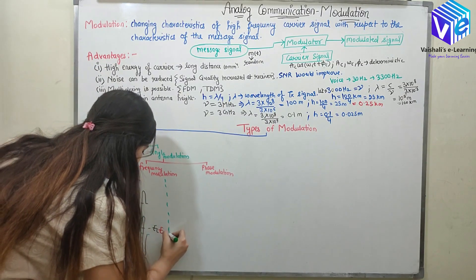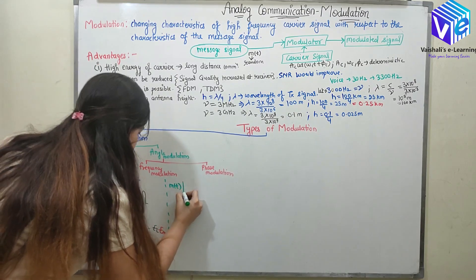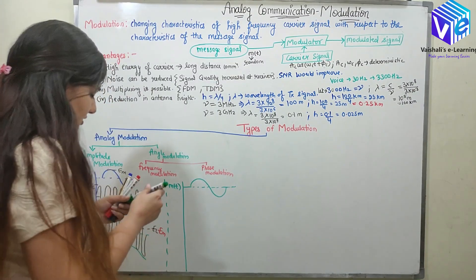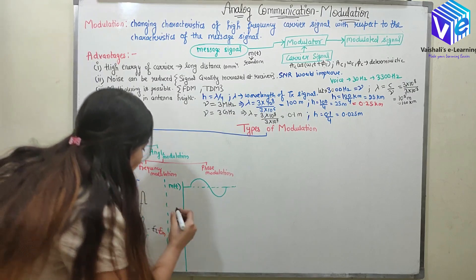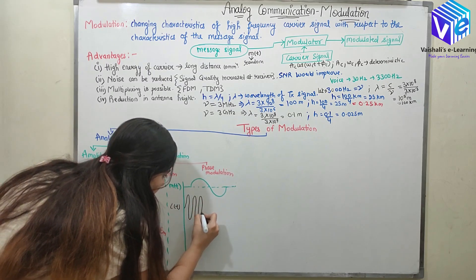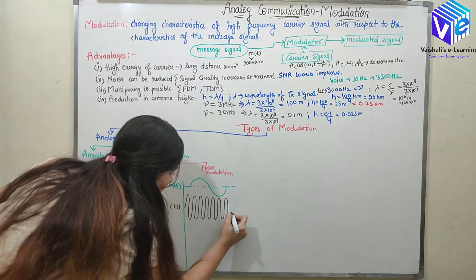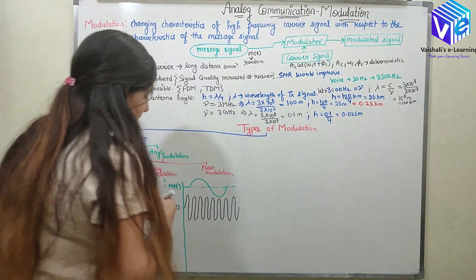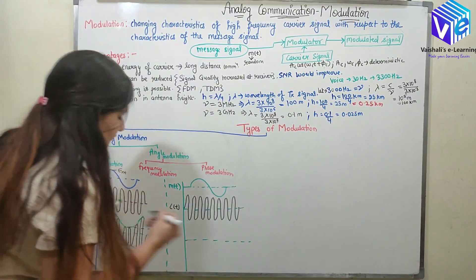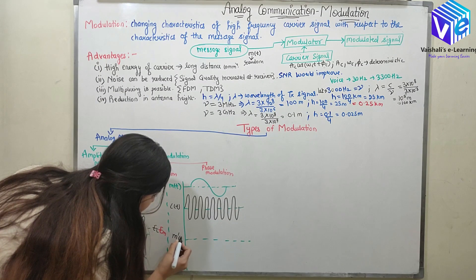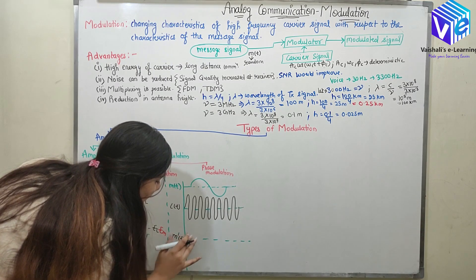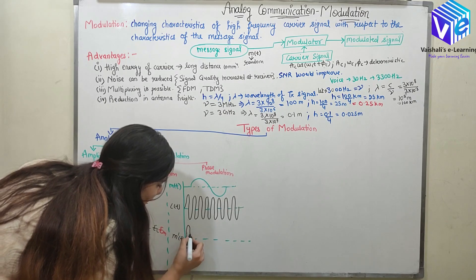We will take the same example again. This is my message signal. Again, I will take a carrier of higher amplitude. This is my carrier. Now this is my M'(t), the output modulated signal. Here the amplitude would remain the same — amplitude is the same throughout the length.